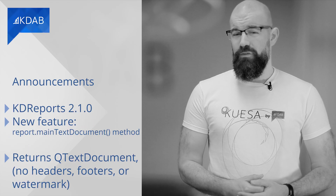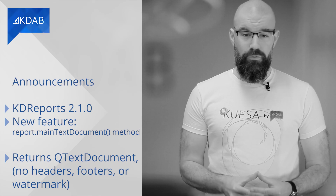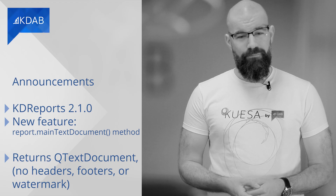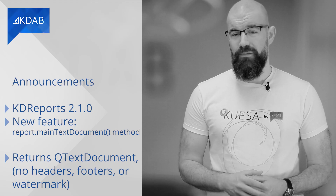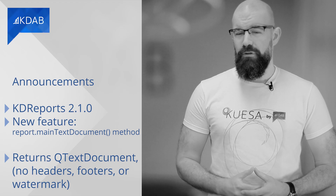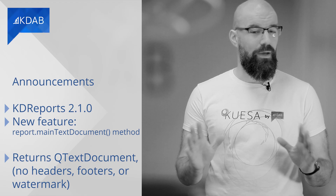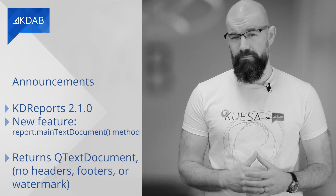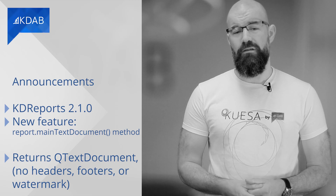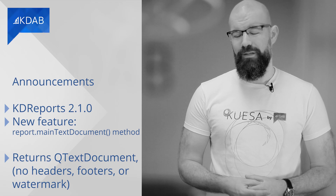Finally, KDE Reports 2.1.0 — a tool that generates printable and exportable reports from code and from XML descriptions — is now available. It comes with a new feature, the Reports.MainTextDocument method. This method returns the QTextDocument for the main part of the report — so no headers, footers, or watermarks — which is useful for displaying the report in a read-only QTextEditor or QTextBrowser. Take a look at the online demo linked below.